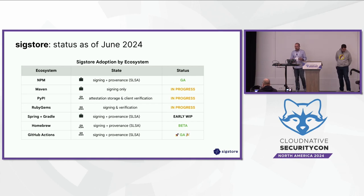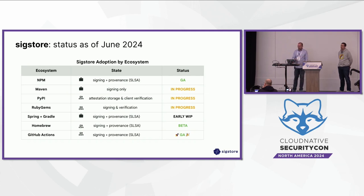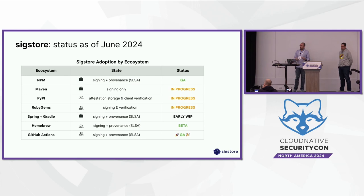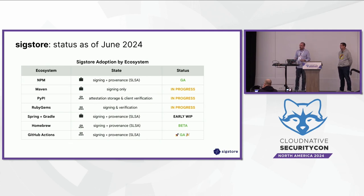On community adoption: NPM was one of the first package managers to integrate Sigstore and SLSA provenance — you can see the workflow that published a particular NPM package. Various others are in progress: Maven, PyPI which Bob will talk about, RubyGems which has found life again, Spring, Homebrew which just went into beta, and GitHub Actions which just went GA. We rely on this attestations API to get guarantees around the source of origin of a project.